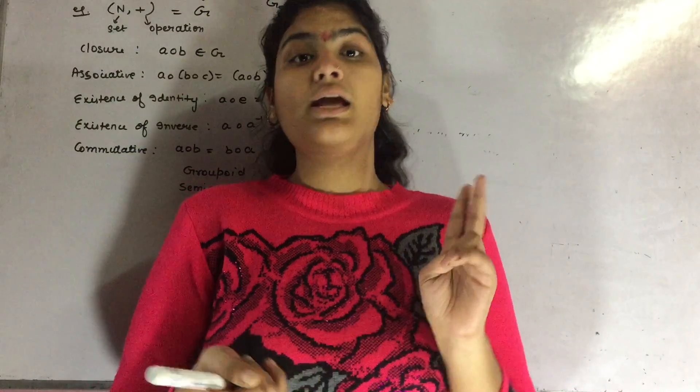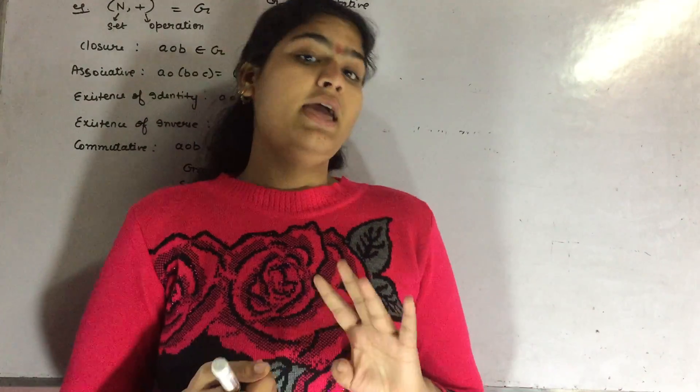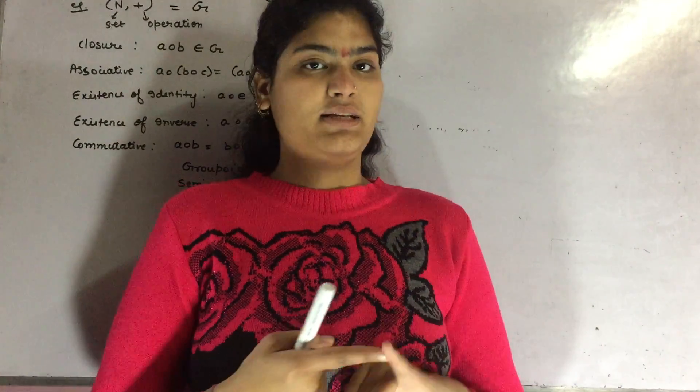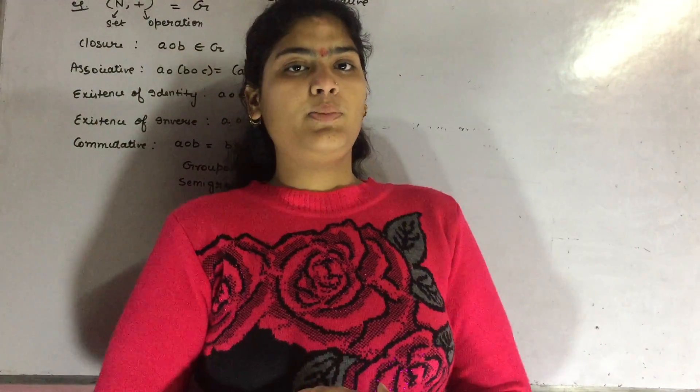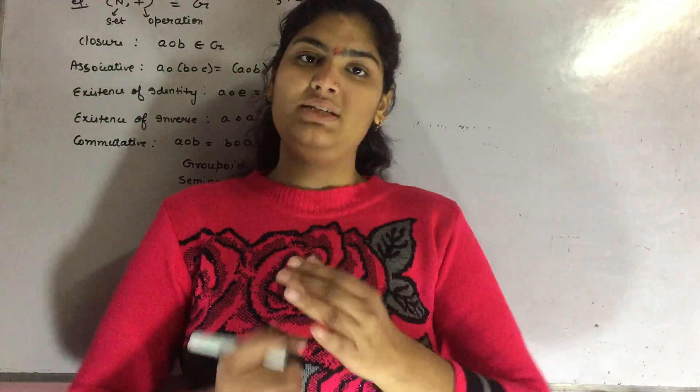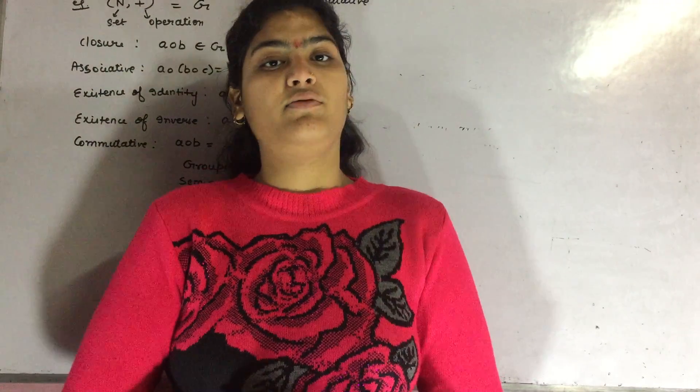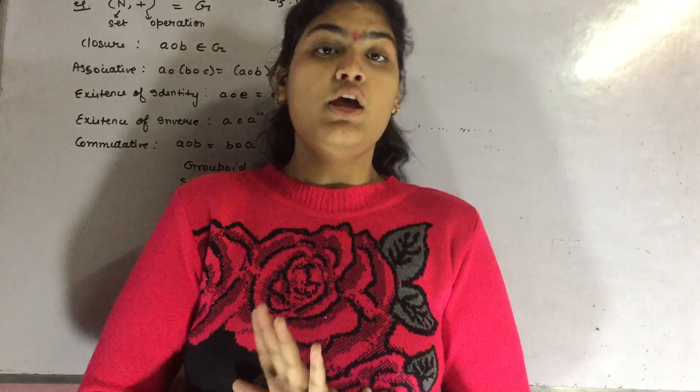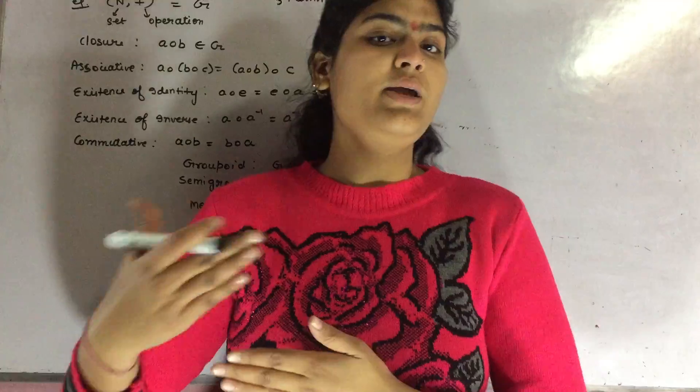What are they? Closure property, associativity, existence of an identity and existence of an inverse. Whereas in Abelian group, just a single property has to be added up which is the commutativity, G5.